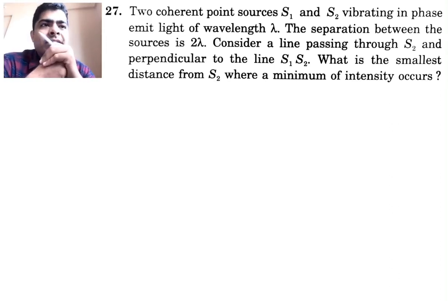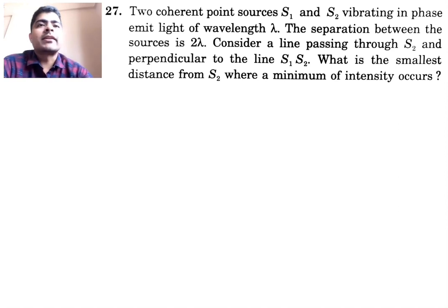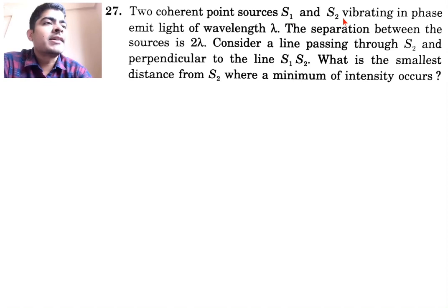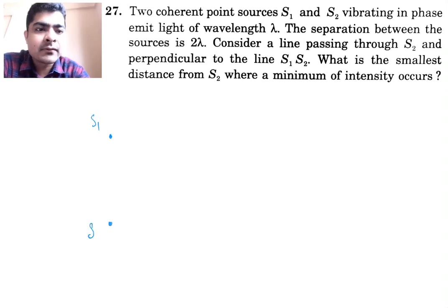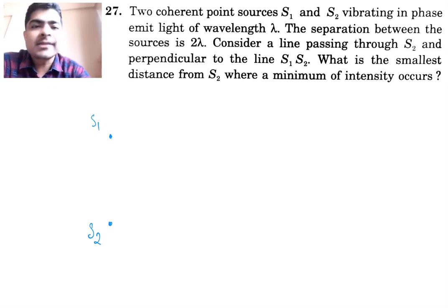We are looking at question number 27 from SC Verma, chapter number 17 — Light Waves, volume 1. Two coherent point sources s1 and s2 vibrating in phase emit light of wavelength lambda. Let's draw the diagram: here is s1 and here is s2. The separation between the sources is 2 lambda.